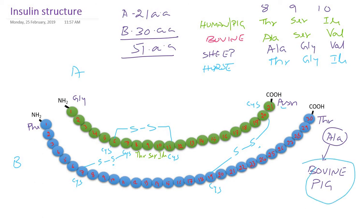Bovine and pig insulin structures are very close to human insulin. The first amino acids of the A chain and B chain are similar across all species, as is the last amino acid of the A chain. Insulin contains an A chain and a B chain connected by disulfide bonds, with an additional intra-chain disulfide bond in the A chain. Thanks for watching.